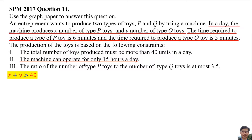The machine can operate for only 15 hours a day, meaning the time used to produce type P toys and type Q toys should not be more than 15 hours a day. The time required to produce a type P toy is 6 minutes, and we have x number of type P toys, so the time used is 6x. The time required to produce type Q toys is 5 minutes, and we have y type Q toys, so the time used is 5y.